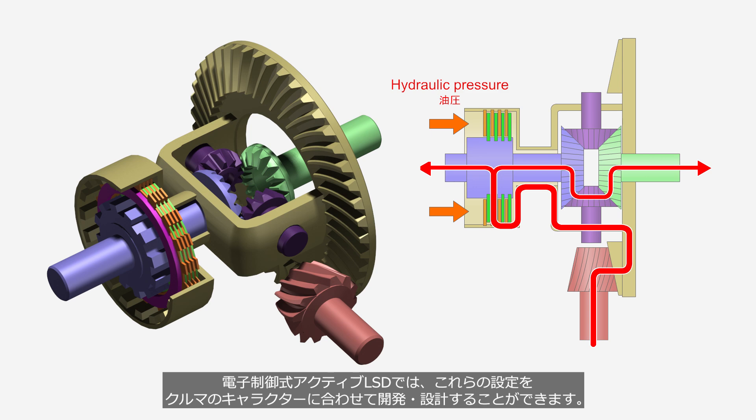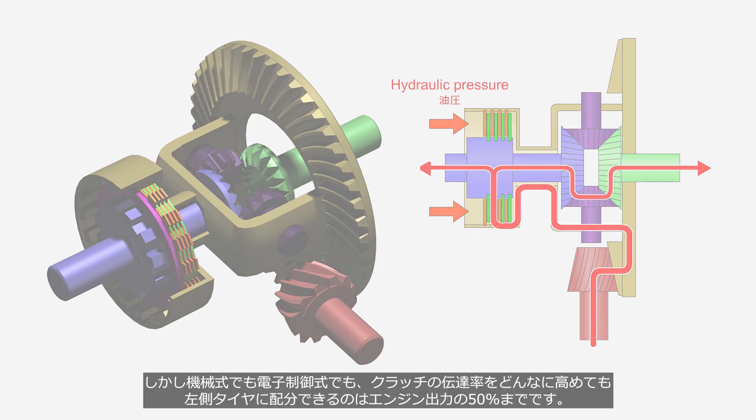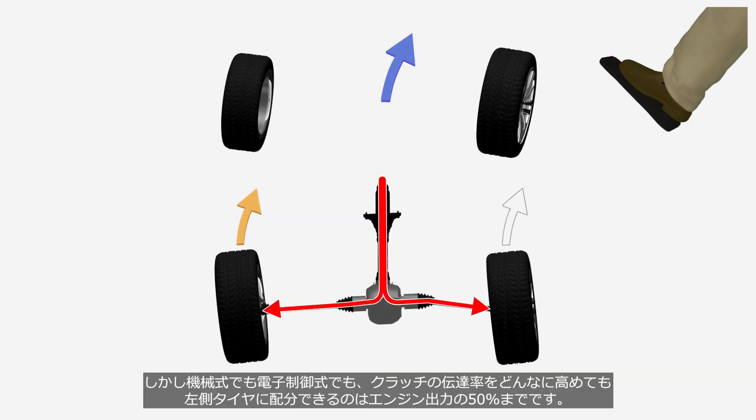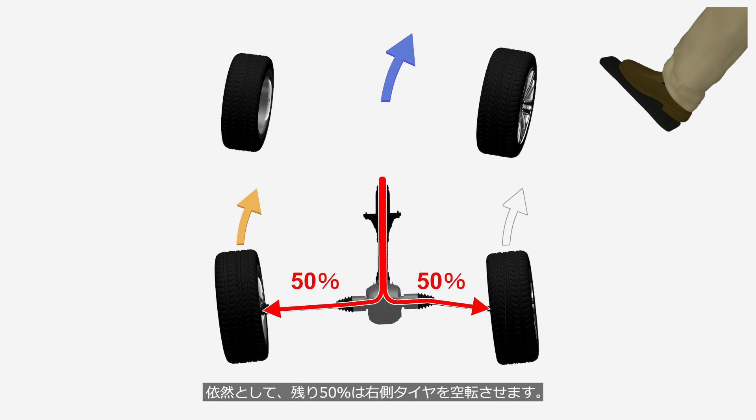Within an electronically controlled active differential, these settings can be configured to match the vehicle model's characteristics. However, whether it's a mechanical or electronically controlled system, no matter how much the clutch transfer rate is increased, only up to 50% of the engine output can be distributed to the left-side tire. The remaining 50% will still cause the right-side tire to spin.